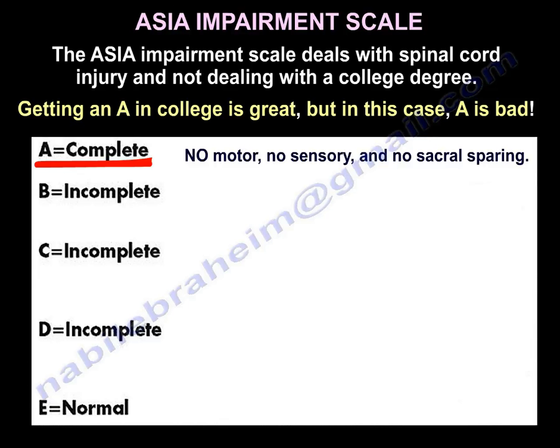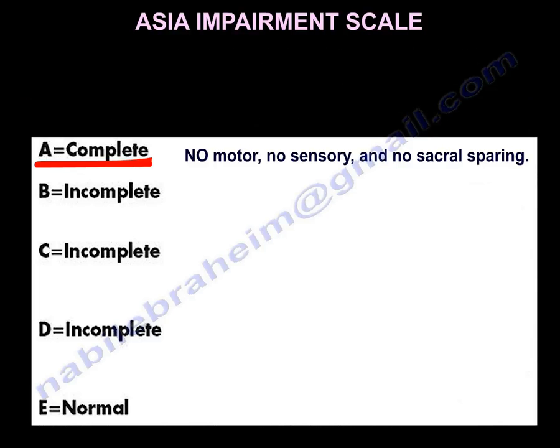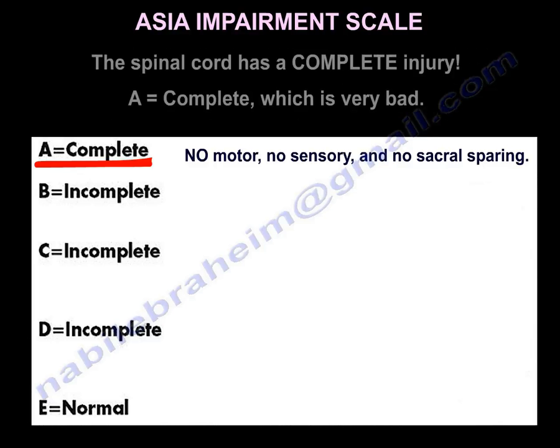In college, if you get an A, you're great. But in spinal cord injury, if you get an A, it is not great — it is bad. The spine is severely injured. A is bad; it means complete injury.